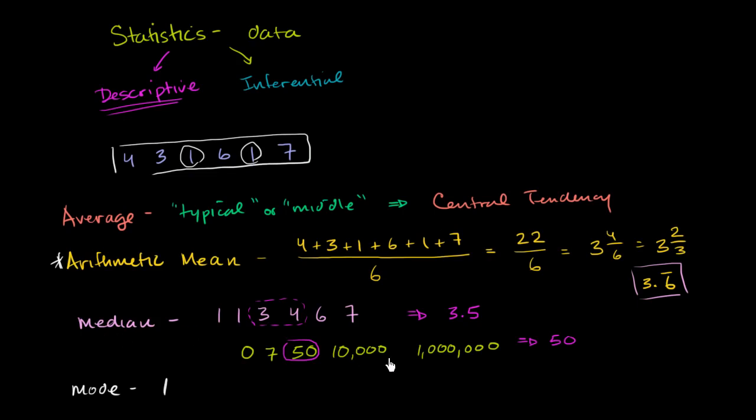The median is really good if you have some kind of crazy number out here that could have otherwise skewed the arithmetic mean. The mode could also be useful in situations like that, especially if you do have one number that's showing up a lot more frequently. Anyway, I'll leave you there and in the next few videos we will explore statistics even deeper.